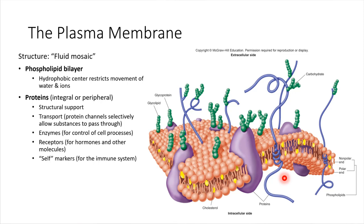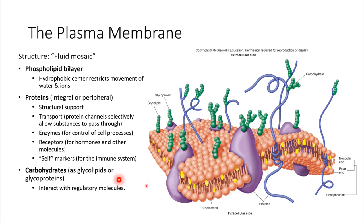We also have carbohydrates present in the plasma membrane. These carbohydrates could be attached to proteins — shown here in green. If you have carbohydrate attached to protein, that's called a glycoprotein.